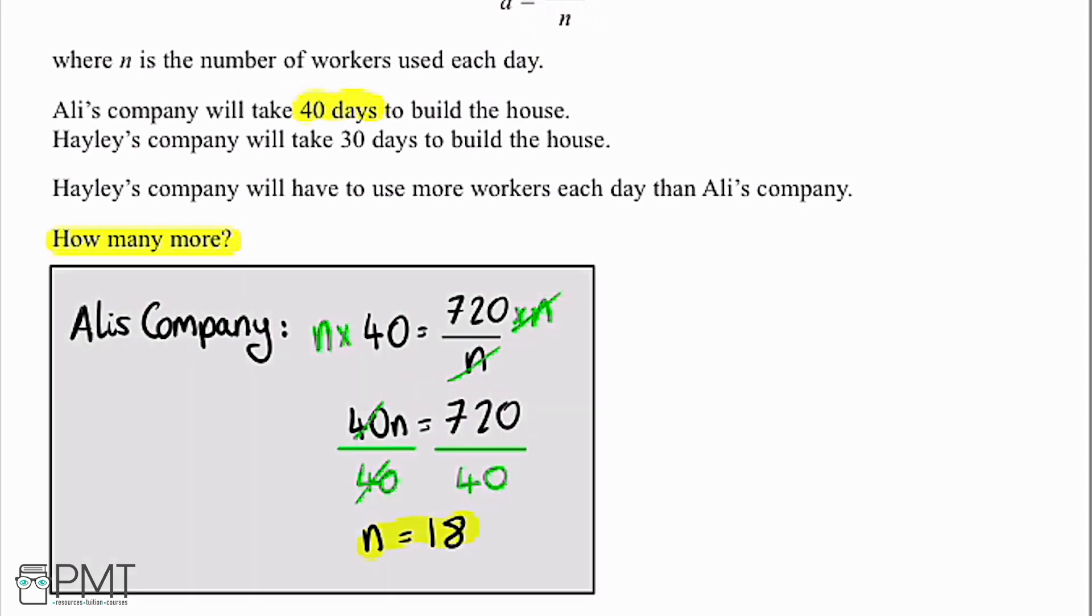So we've got to do the exact same thing for Hayley's company. This time we're told it's going to take 30 days to build a house. So again, referring up to our formula, we're going to get 30 equals 720 divided by n. And again, let's rearrange to get n as the subject.